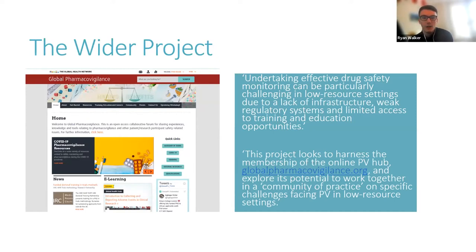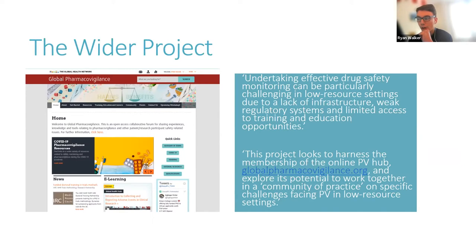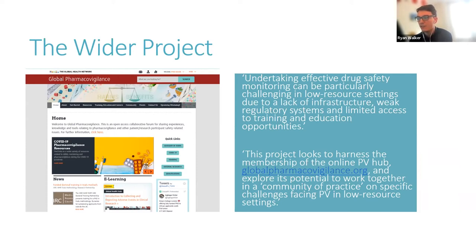This online pharmacovigilance hub, Global Pharmacovigilance, exists as a member hub of the Global Health Network. It has over 6,000 members currently around the globe, close to 6,500 now, and its position on the Global Health Network also means that we can encourage interaction and knowledge sharing and resource sharing with researchers and healthcare professionals engaged in a wide range of activities in other research areas based on the Global Health Network.